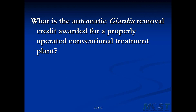What is the automatic Giardia removal credit awarded for a properly operated conventional treatment plant? We will receive two and a half logs of removal credit if we have a conventional treatment plant that is regarded by the regulatory agency as being properly operated. Our total requirement for Giardia removal is three logs, so we're almost all of the way there with respect to Giardia.